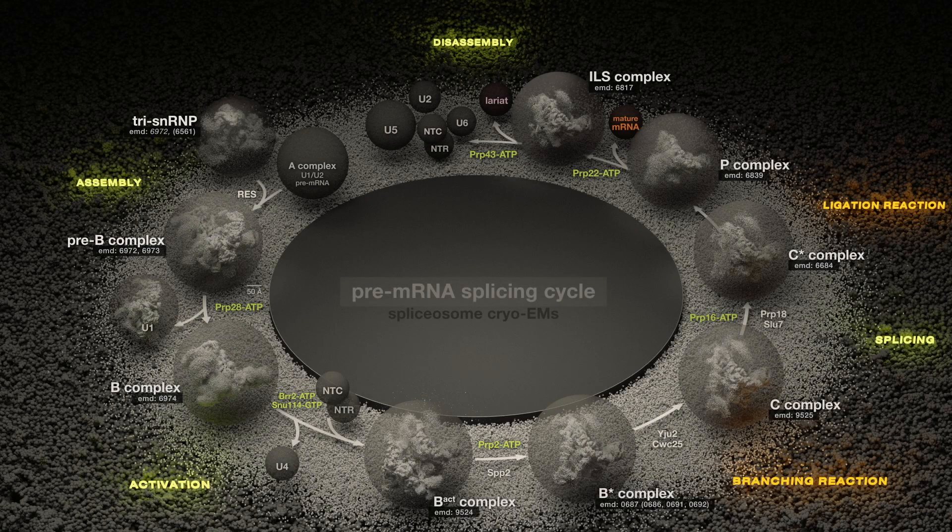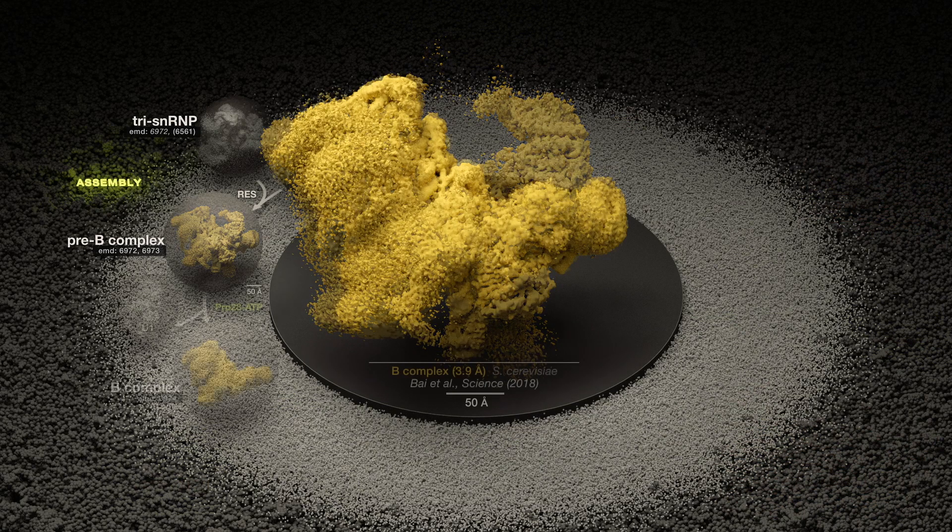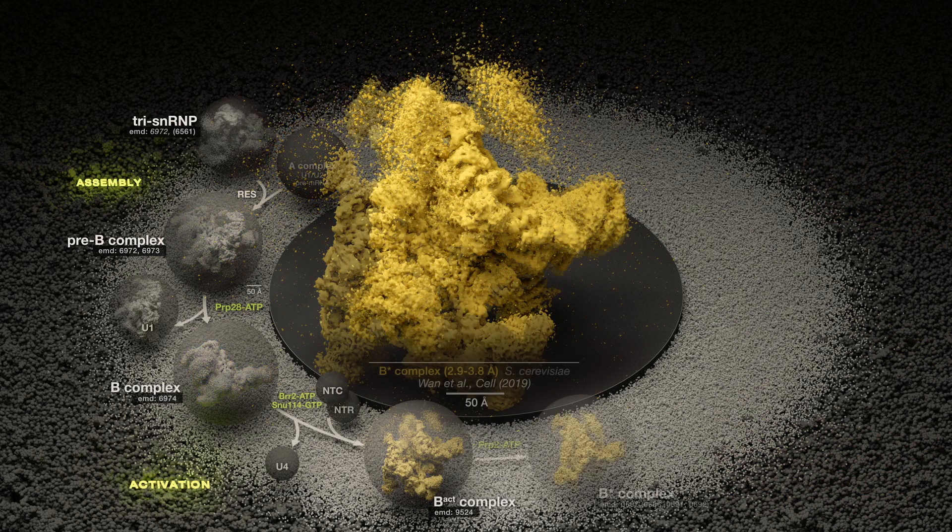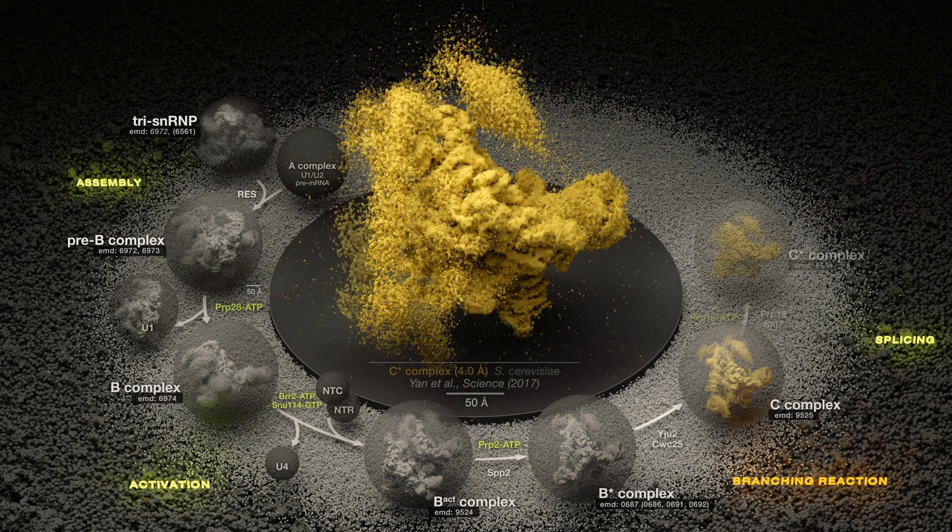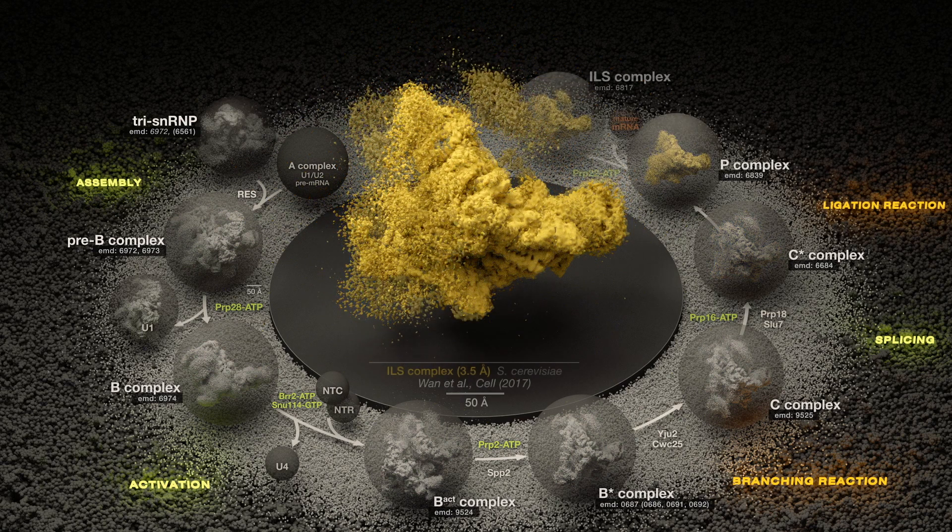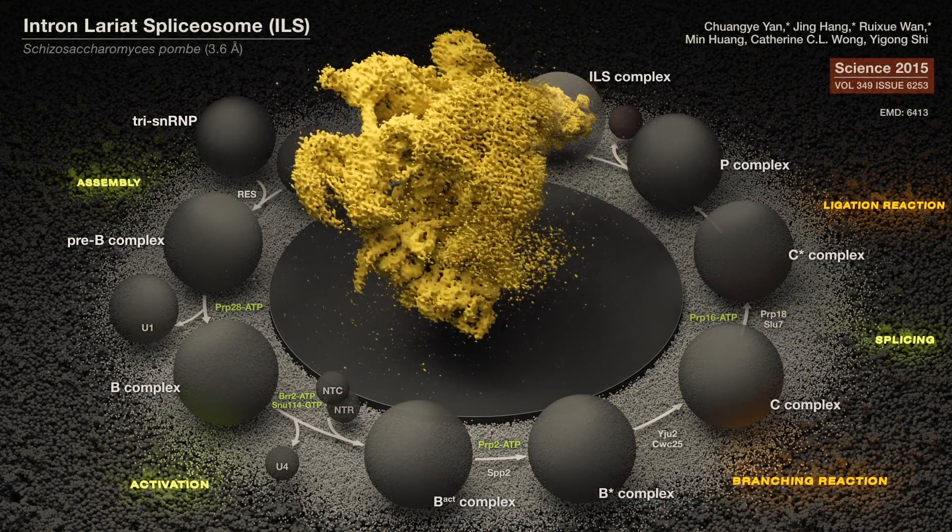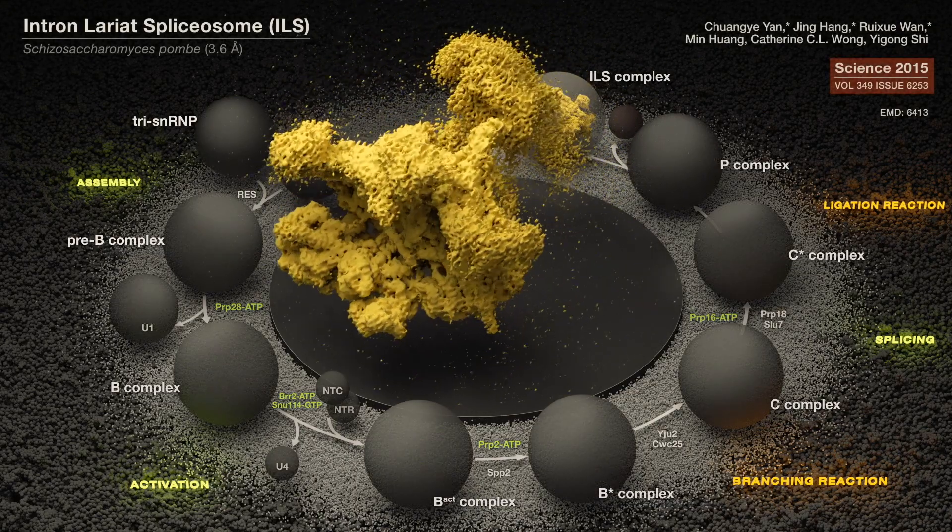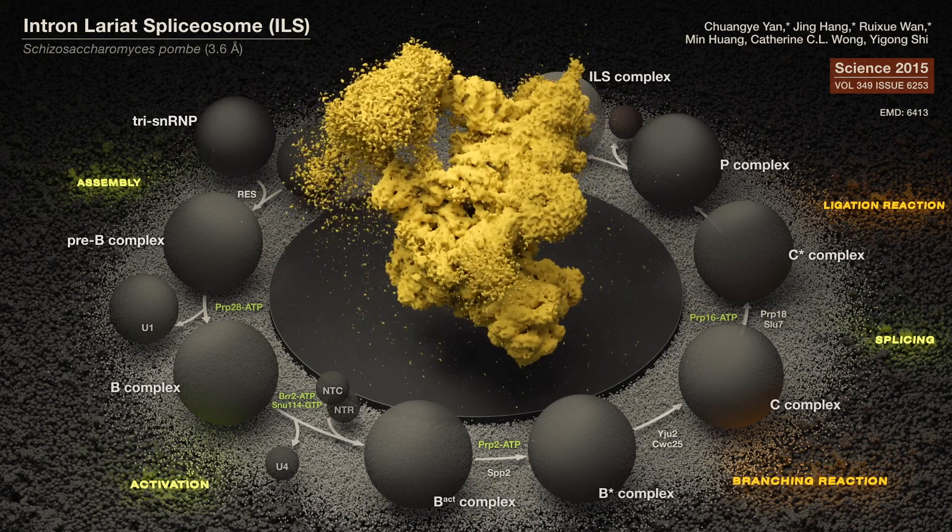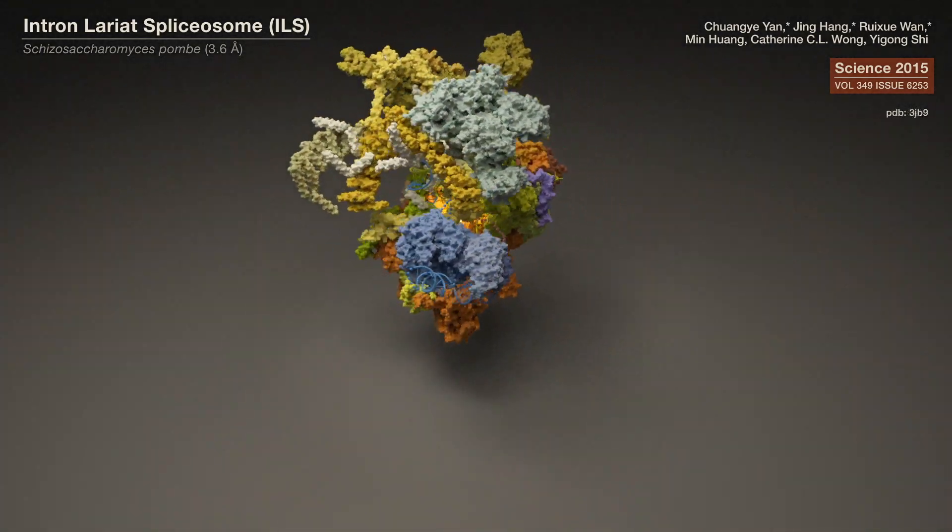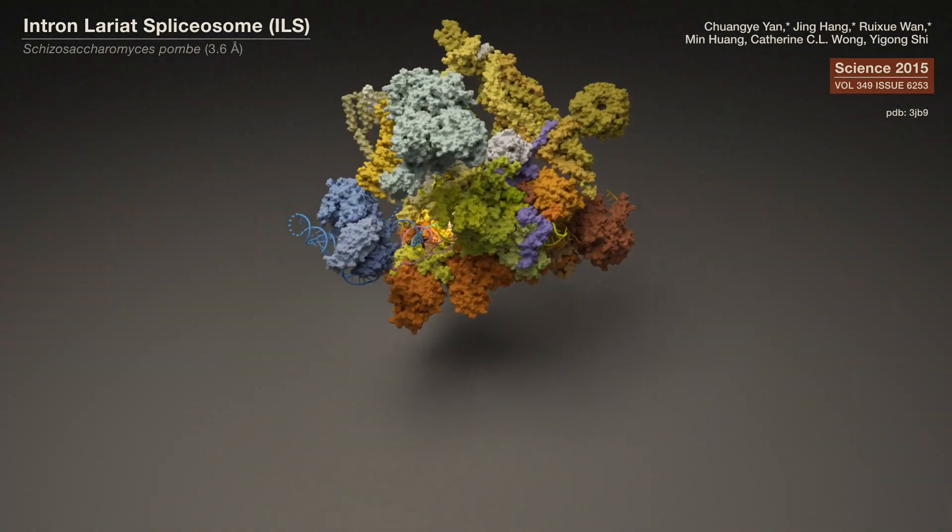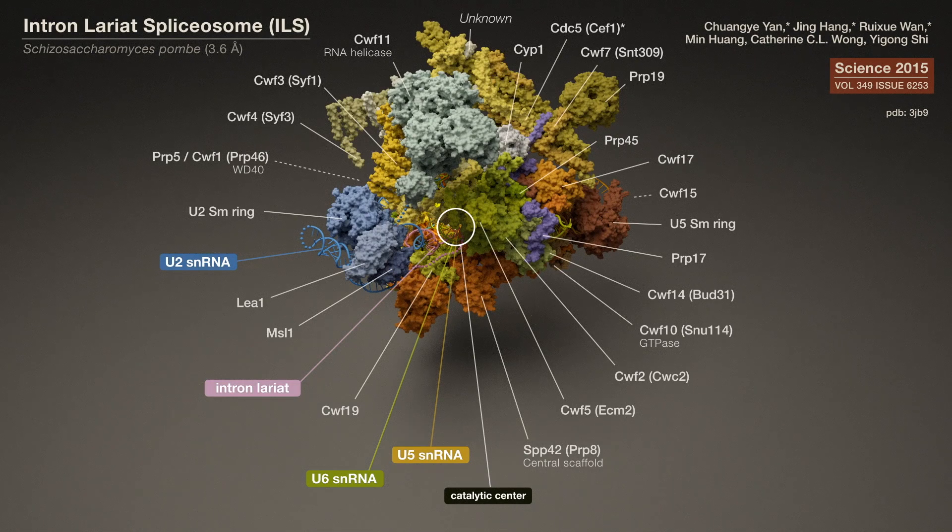Visualization of the splicing cycle of each major complex involved in assembly, activation, splicing, branching and ligation reactions and intron-lariat spliceosome disassembly has now been achieved at high resolution and atomic detail. In 2015, the 3.6-angstrom resolution structure of the ILS complex, solved in the Yigong Shi laboratory, enabled atomic modeling of an intact spliceosome for the first time.